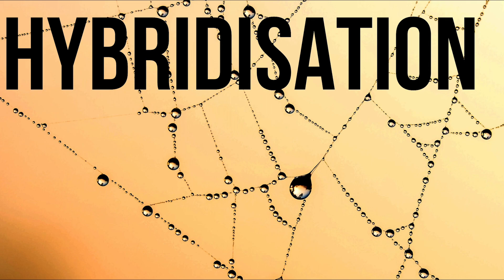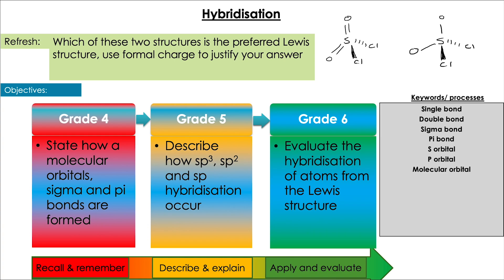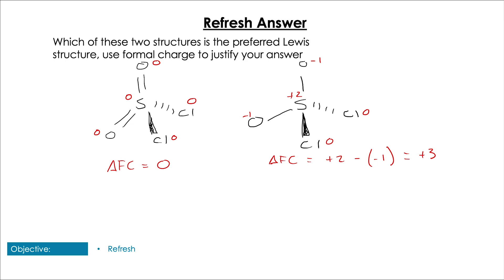Hey guys, welcome back to Pop Them Up Chem. We're carrying on with unit 4, looking at an HL-only topic: hybridization. Don't worry for all the SL people though, there are still videos left in this unit. Just to get started, using what we did in the formal charge video — which of these two structures is the preferred structure? The molecule on the left has a formal charge of zero and the molecule on the right has plus three, so the molecule on the left is the preferred structure as whichever one has delta FC closest to zero is preferred.